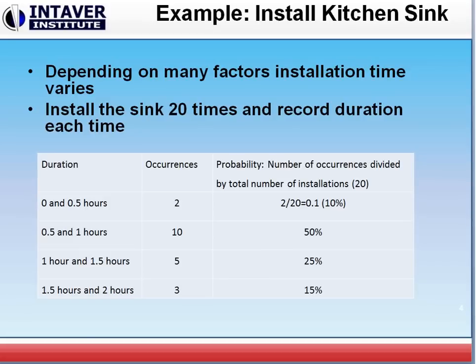Now in these 20 times, we saw that twice we were able to complete it in half an hour or less. Ten times we completed it between half an hour and an hour. Five times between an hour and one and a half hours. And finally when more things went wrong, we forgot where our tools were, we didn't have the parts, it took us between an hour and a half and two hours. This lets us build up some probability that we can complete this activity in a certain amount of time.